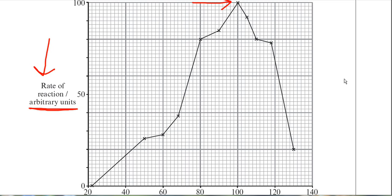That graph should have the same general pattern as one you've seen before. Don't get put off by the regions where the line deviates a little bit. The overall pattern is: as the temperature increases, so does the rate of reaction, until you reach the maximum — often known as the optimum — and then the rate of reaction decreases after the optimum.